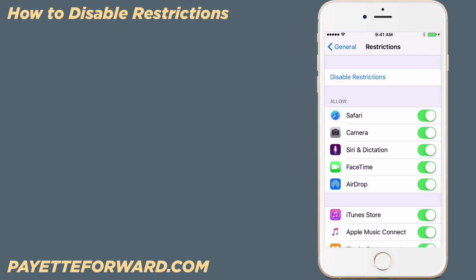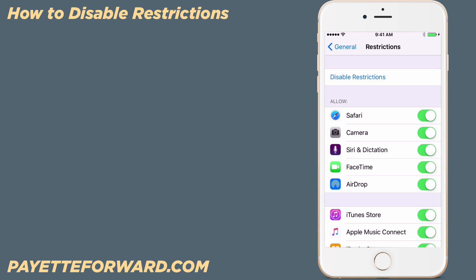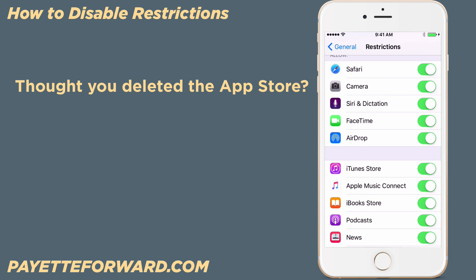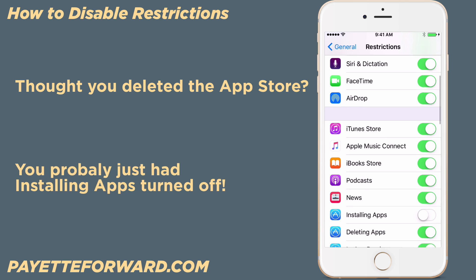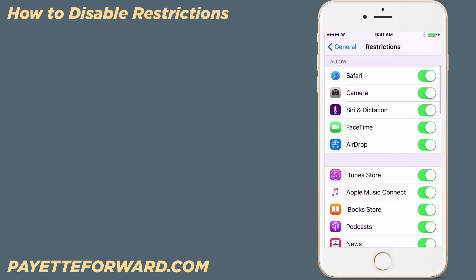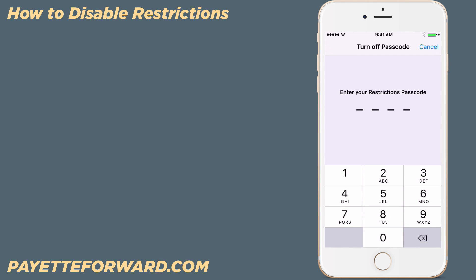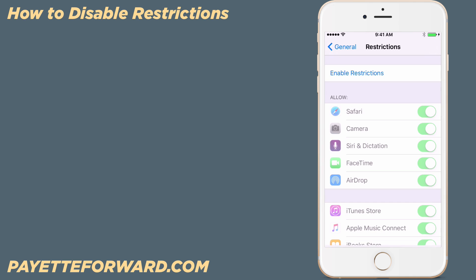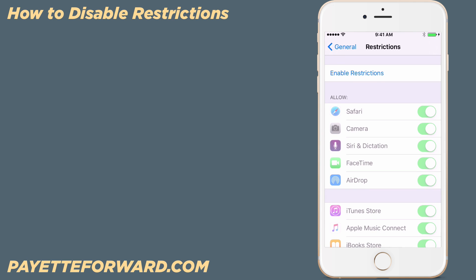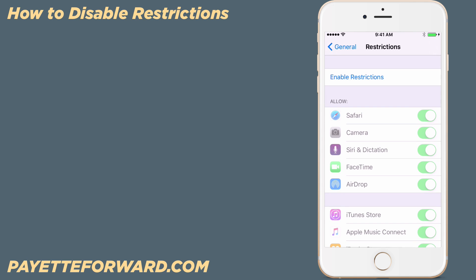You may notice you had some functions turned off. For example, if you thought you deleted the App Store, you probably just had installing apps turned off. To solve this problem once and for all, go back to the top and select Disable Restrictions. Enter your restrictions passcode one last time, and now restrictions has been disabled.